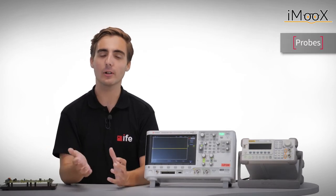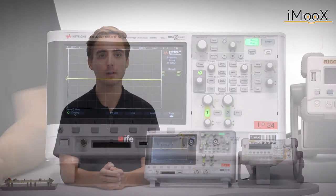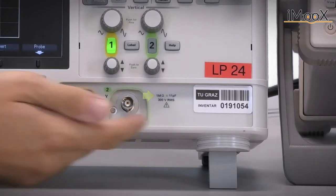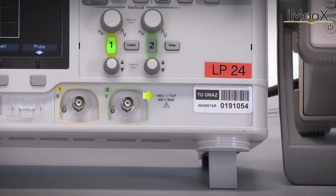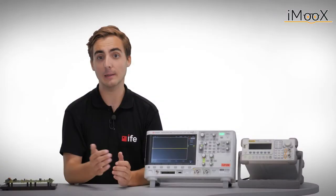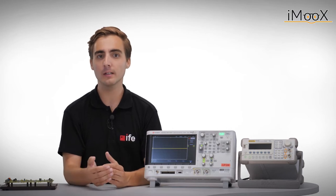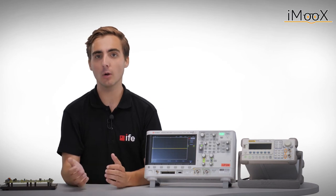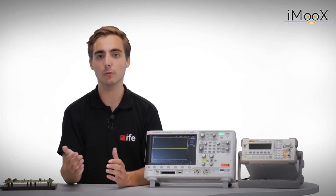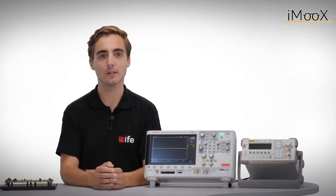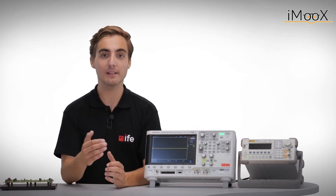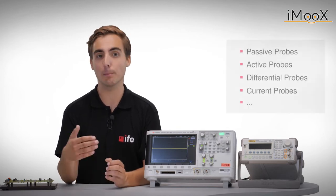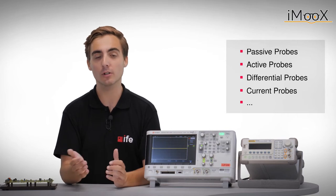Last time we simply connected our signal generator to the input of our scope. In general, these inputs have an impedance of about 1 Mega Ohm, and therefore high ohmic such as voltmeters. Some scopes also offer the possibility to change to a 50 Ohm input for high speed signals. Until now we have neglected any parasitics that might come from the scope input itself. For this case, probes can be useful as they allow to adjust to the measurement needs. There are multiple types of probes like passive, active, differential and many more.